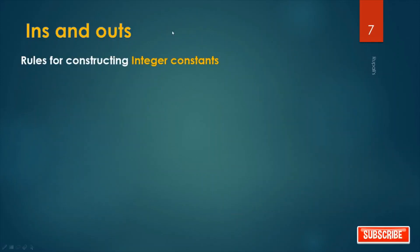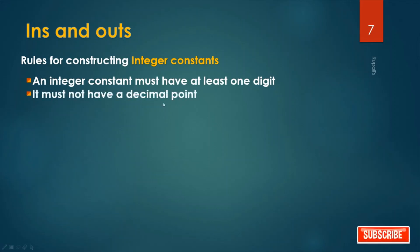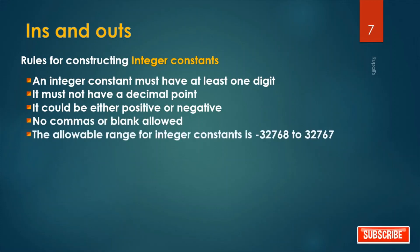Rules for constructing integer constant: An integer constant must have at least one digit. It must not have a decimal point. It could be either positive or negative. No commas or blanks allowed. The allowable range of integer constants is minus 32768 to positive 32767. Examples are 426, plus 728, minus 800.